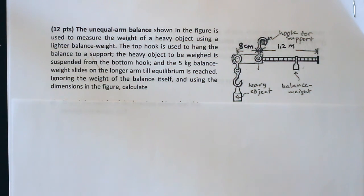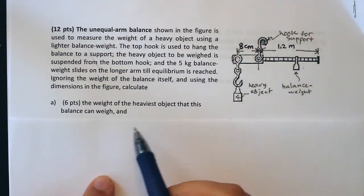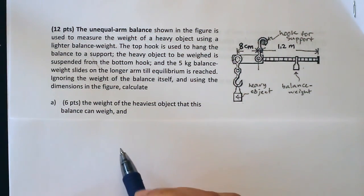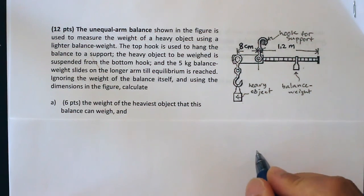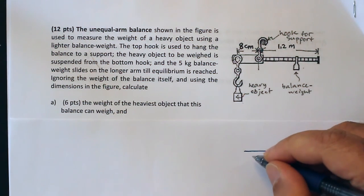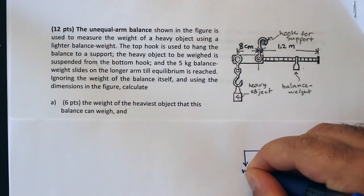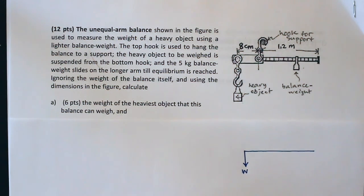So the first question is asking about the weight of the heaviest object that this balance can weigh. To find that out, I'm going to draw the free body diagram of this balance. The heavy object is always hanging from here and it has some weight W, and what I want to know here is the maximum value for this W.